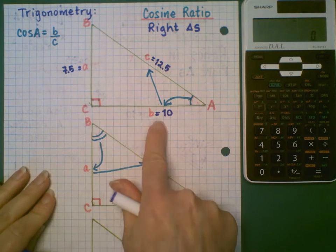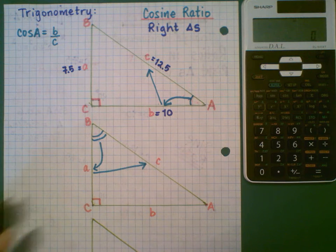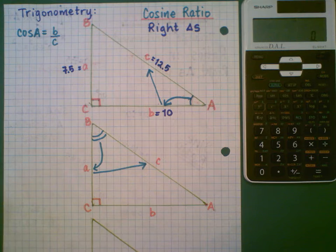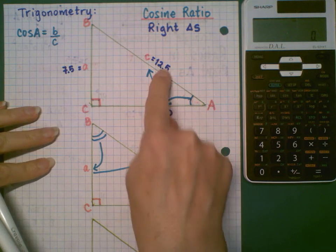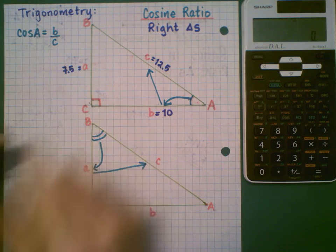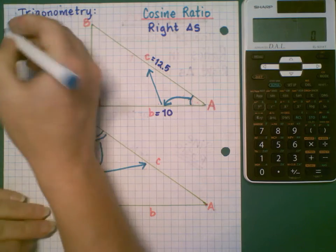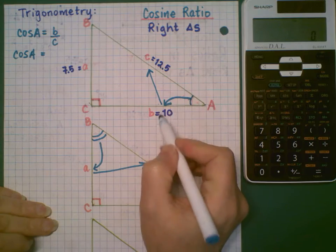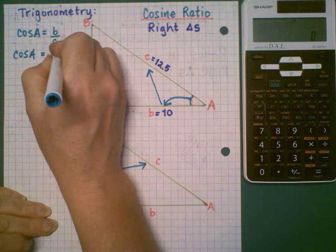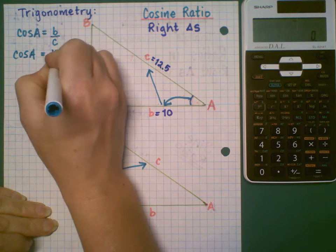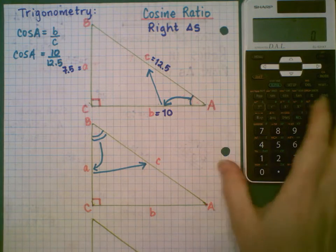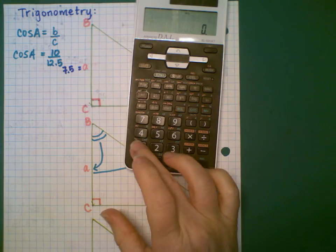If you were given two of the three, you could solve for the third using Pythagorean theorem, of course. So in this case, if I'm going B over C to get my cosine ratio, then cosine A is 10 over 12.5. Which I can turn into a decimal value.